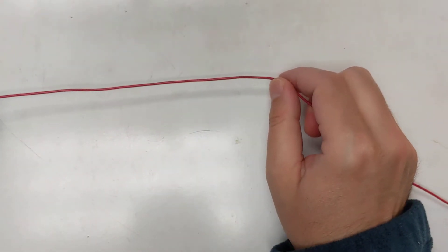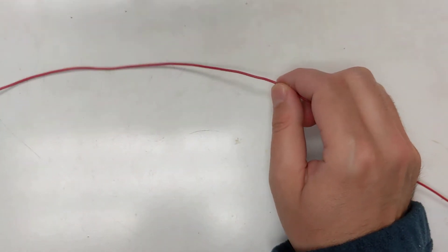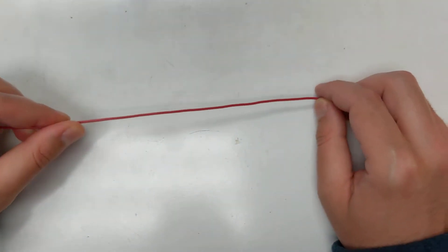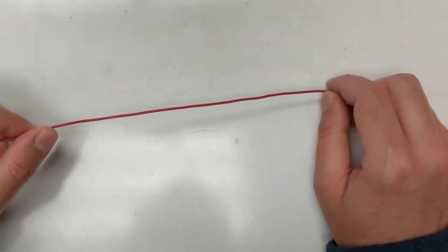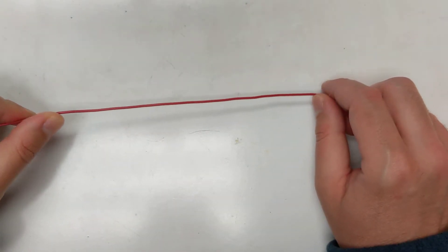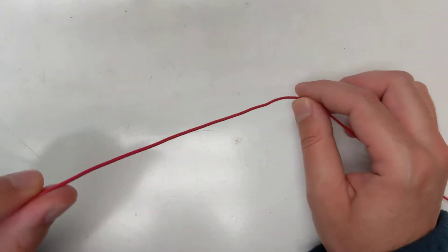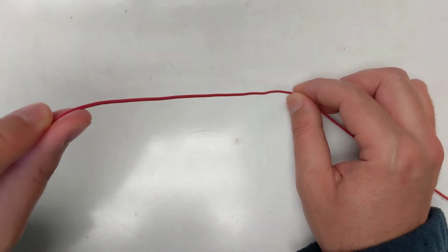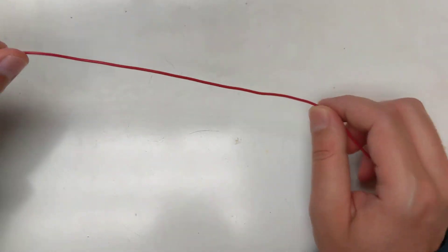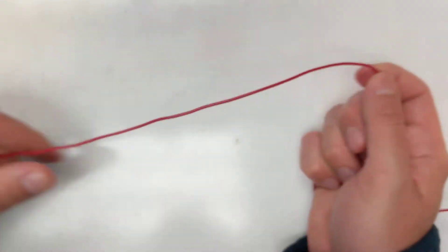In this video I will show you an example of a straight wire and I will also show you how to find the direction of the magnetic field from a current flowing in a straight wire.